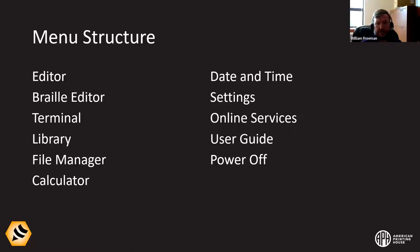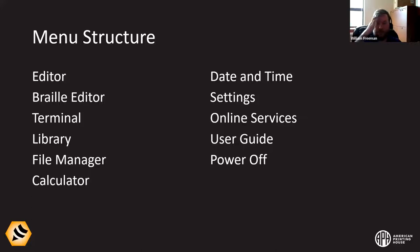Online services is how you access NFB Newsline and Bookshare services — you can log in, download books, and check out magazines if you have an account. There's a whole series of Mantis videos that covers a lot of these topics, and basically everything from those Mantis videos can be used with the Chameleon, especially for online services. The user guide will be the latest user guide for the version you're on. And finally, power off — you can use this menu item or just hold the power button on the left edge of the unit.